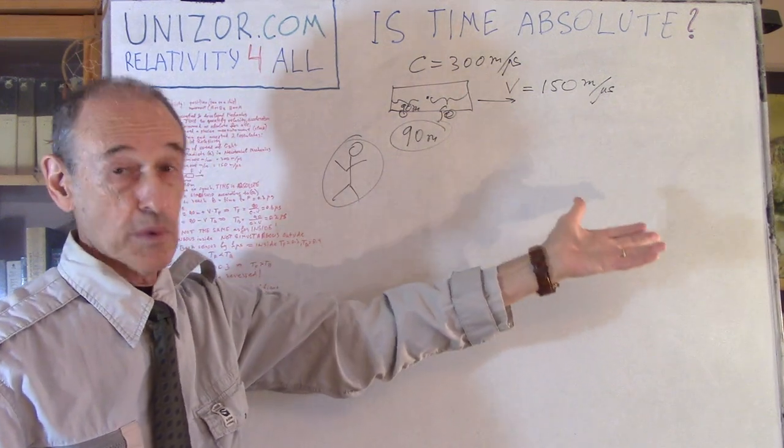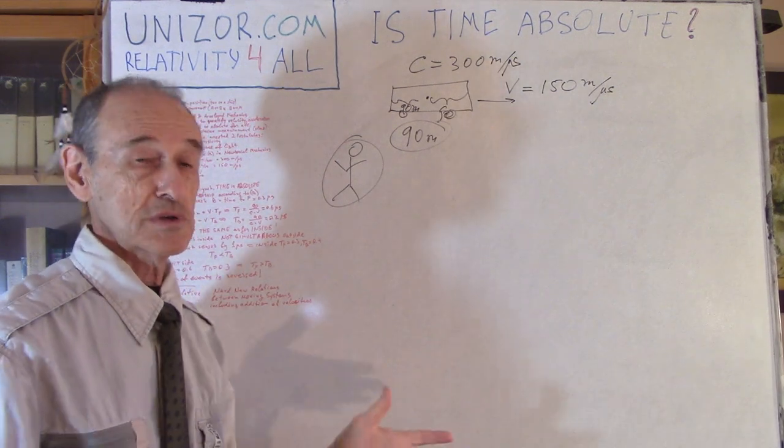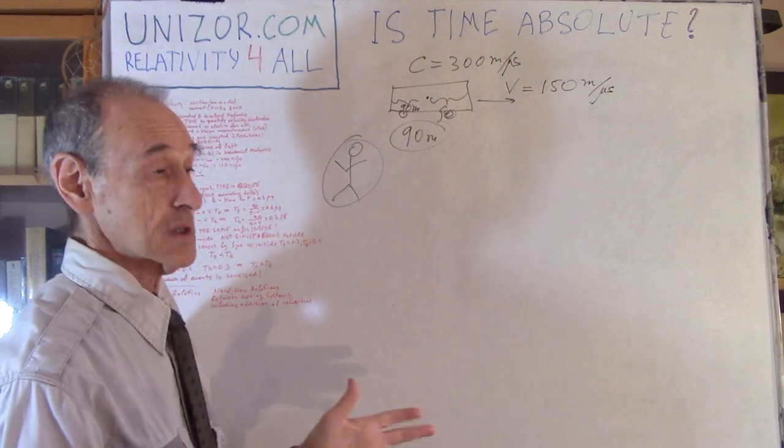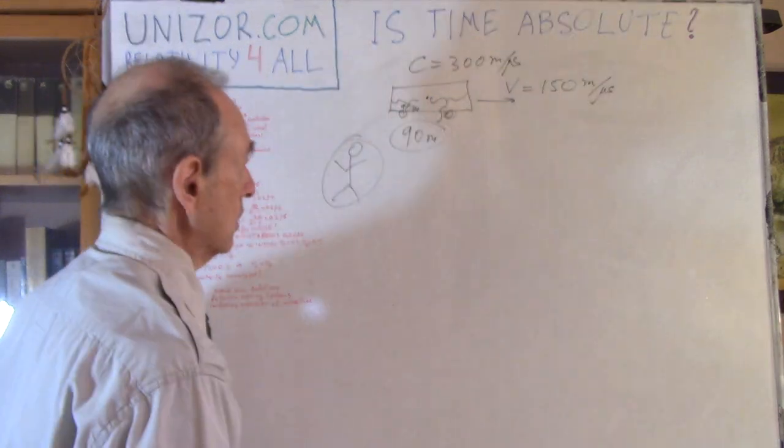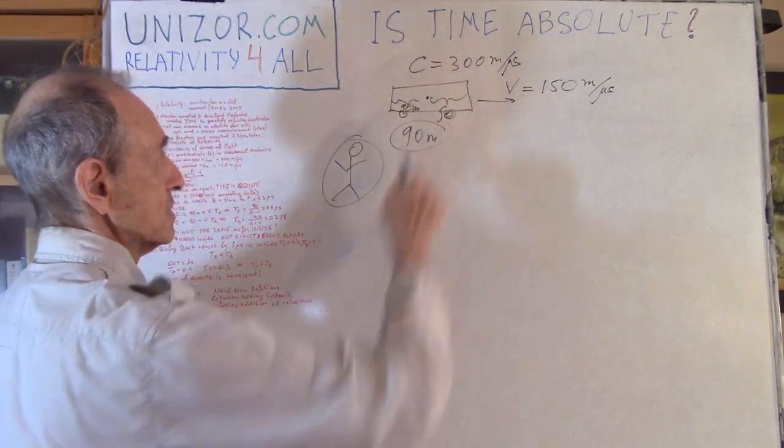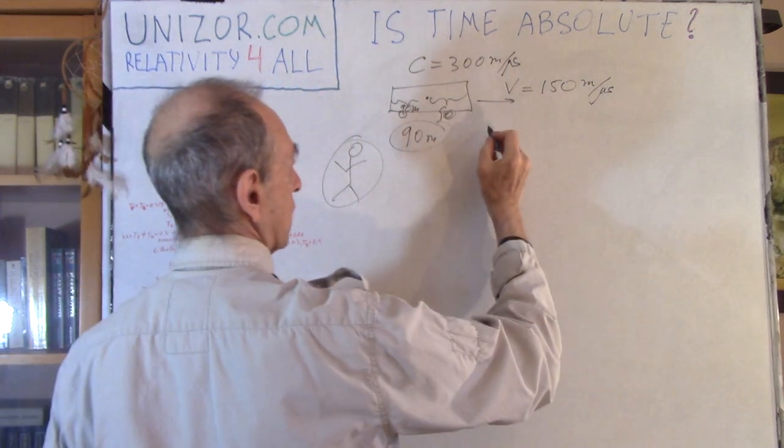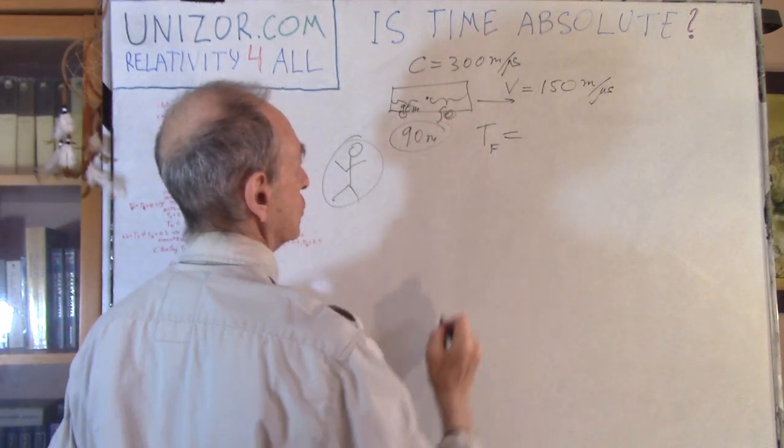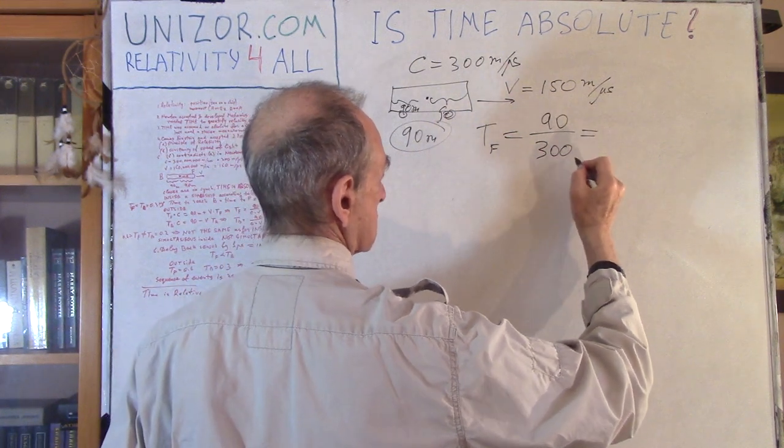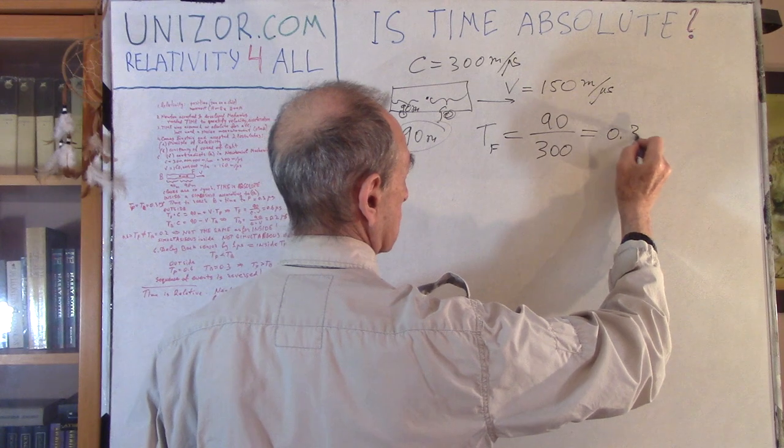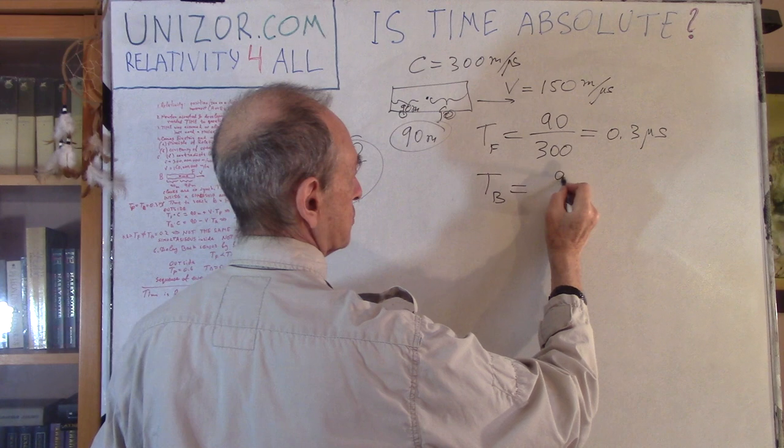Now principle of relativity tells that it should be exactly the same time to reach the front wall as the back wall, regardless of the speed of the car itself or the train. Because otherwise, it would be an experiment which would determine my absolute movement. And there is no such thing as absolute movement. Movement is relative. So let's just calculate it. If it's 90 meters with the speed of light 300 meters per second, you would have that the T to the front is equal to 90 divided by 300, which is 0.3 microsecond. And time to the back would be the same.